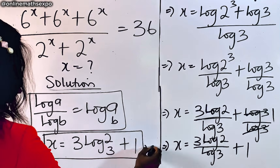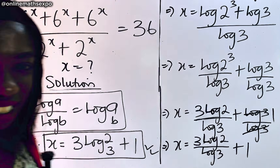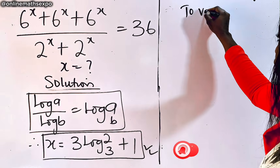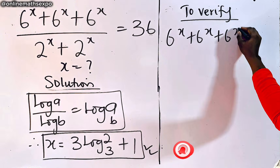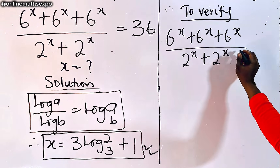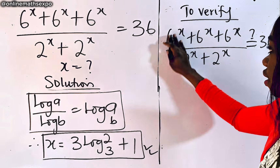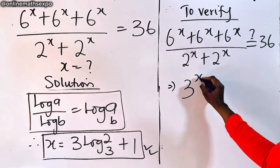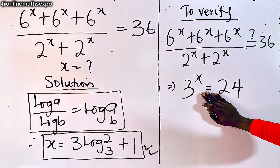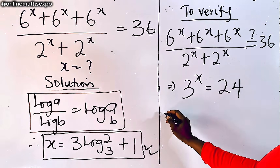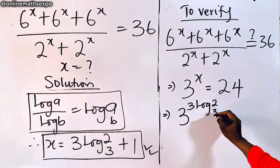So this gives us the value of x. Now we're going to plug this x value back into the left side to verify it gives us 36. From the left side we have 6 to the x-power plus 6 to the x-power plus another term, all divided by 2 to the x-power terms. When we simplified earlier, we got 3 to the power of x equals 24. So we'll use that equation to plug in the x value, giving us 3 to the power of 3 log₃2 plus 1.